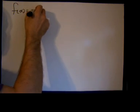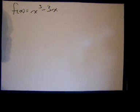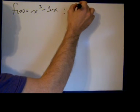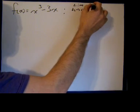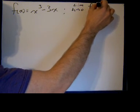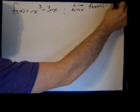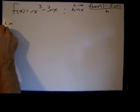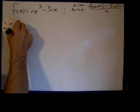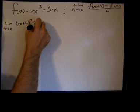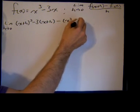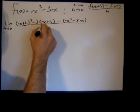The function is f(x) = x³ - 3x. The slope of the tangent line by definition is the limit as h approaches zero of f(x+h) minus f(x), all divided by h. So we'll set that up: the limit as h approaches zero of (x+h)³ minus 3 times (x+h), minus x³ minus 3x, all divided by h.